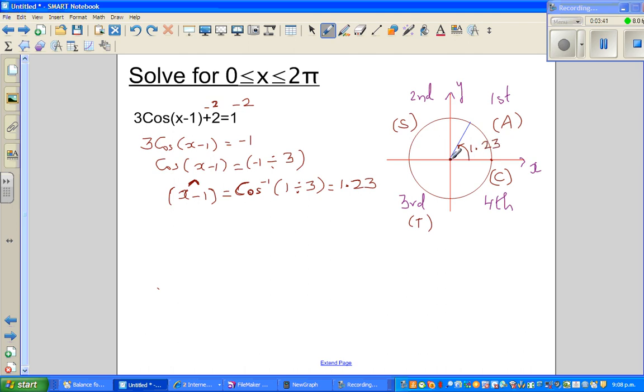But in the question, we have a negative 1 divided by 3. This was for 1 divided by 3, or this was for 0.33. But this is negative. Now you have to think, this is a good representation of the unit circle.